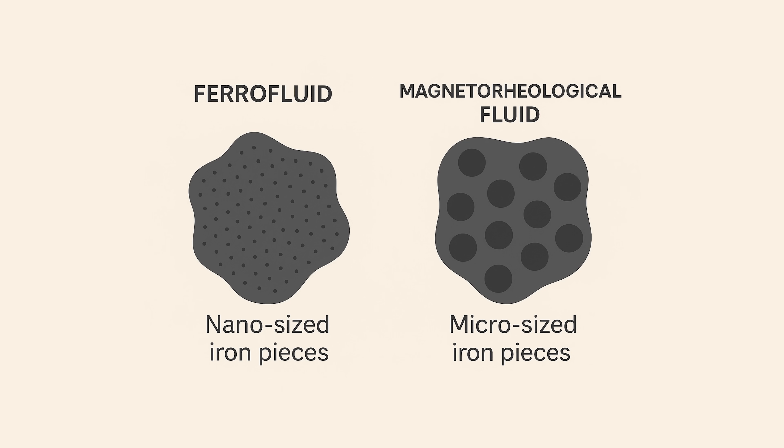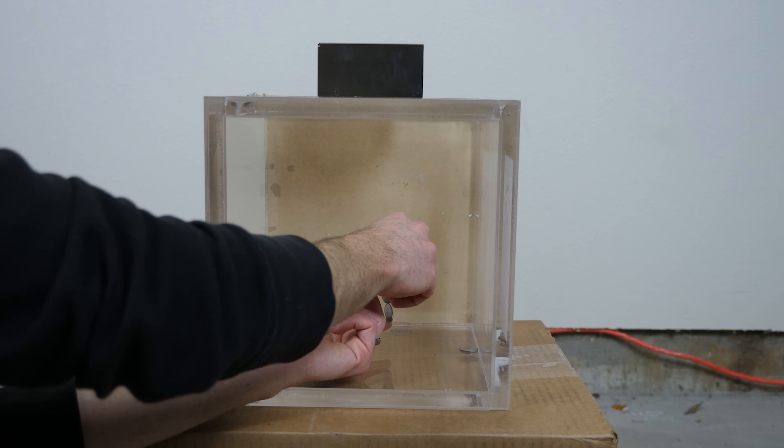But then what's the difference between these two fluids? Well, both the ferrofluid and the magnetorheological fluid have tiny particles of iron in them. Let me show you what happens when pieces of iron get around a magnetic field.